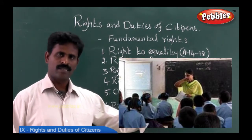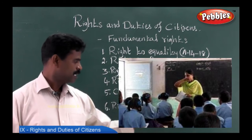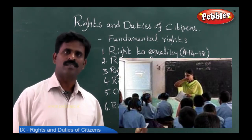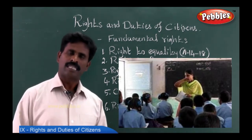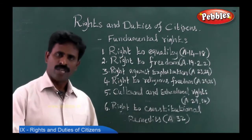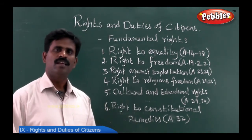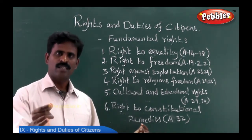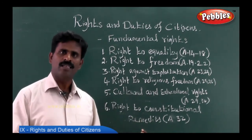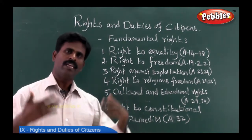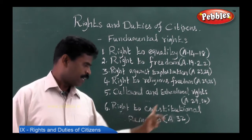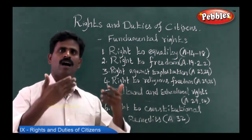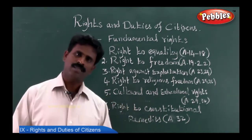These cultural and educational rights make a person precious in the country. Let's move to constitutional remedies. The constitution came into effect in 1950. The world keeps changing and the constitution needs to be updated accordingly. A citizen has the right to move the Supreme Court, the High Court, or any judicial department for an amendment. This is called the right to constitutional remedies. A citizen can go to the court and ask for the change of any rule which is outdated, obsolete, or out of time.